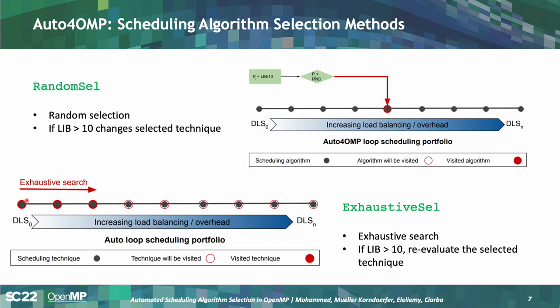The second method is exhaustive selection, which tries one scheduling algorithm per execution instance. The first time the loop executes it tries the first algorithm; the next time step it tries the second, and so on. For each it measures loop execution time and selects the algorithm achieving the best time. If the load imbalance increases over 10 percent, it performs the search again to re-evaluate and select the best algorithm.